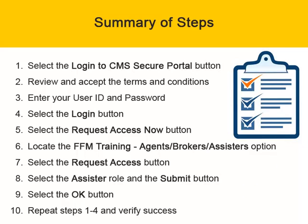Summary of Steps: 1. Select the Login to CMS Secure Portal button. 2. Review and Accept the Terms and Conditions. 3. Enter your User ID and Password. 4. Select the Login button. 5. Select the Request Access Now button. 6. Locate the FFM Training Agents Brokers Assisters option. 7. Select the Request Access button. 8. Select the Assister Role and the Submit button. 9. Select the OK button. 10. Repeat Steps 1 to 4 and Verify Success.